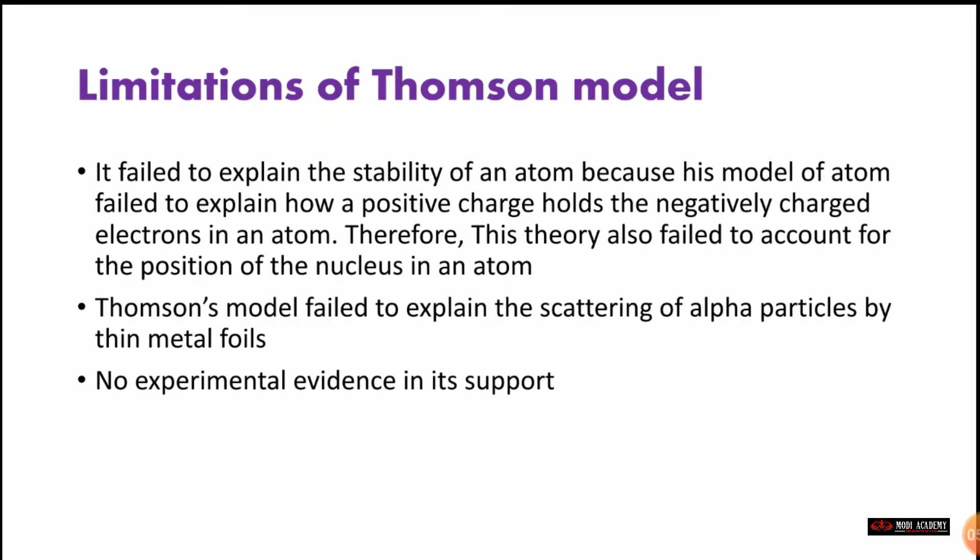Now, having read the postulates and the whole theory, we should note that since this theory is very old, there were many limitations. Whenever something is first discovered, it cannot be perfectly right — there are advantages and disadvantages. Thomson's model failed to explain the stability of an atom because it could not explain how the positive charge holds the negative electrons in place. This theory also failed to account for the position of the nucleus in an atom.